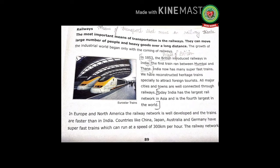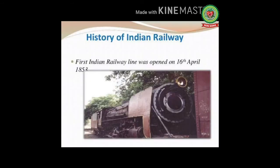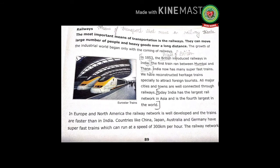The first train ran between Mumbai and Thane. Write down the meaning of 'British': people of Britain. The first Indian railway line was opened on 16th April 1853 and it ran between Mumbai and Thane. India has many super-fast trains, and we have reconstructed heritage trains specially to attract foreign tourists. Write down the meaning of 'reconstructed': rebuilt. 'Foreign tourist' means people who come from other countries. Mark the term heritage trains: railways included in the UNESCO World Heritage list.